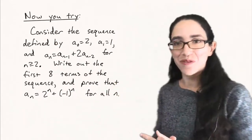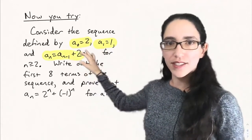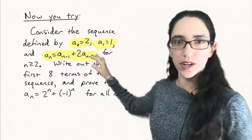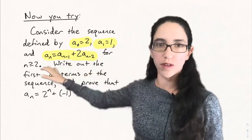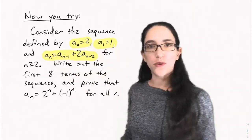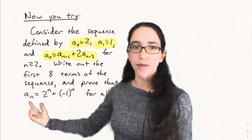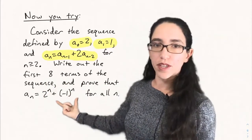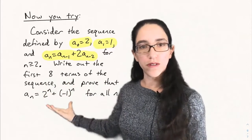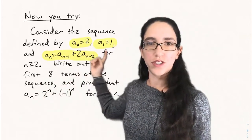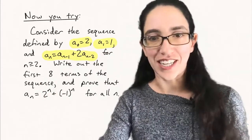So now you try working with a recursive sequence. Consider the slightly modified sequence defined by a₀ equals 2, a₁ equals 1, and aₙ equals aₙ₋₁ plus 2aₙ₋₂ — a little bit of a variation on the Fibonacci sequence. Write out the first eight terms of this sequence. If you do, you might see the pattern that aₙ equals 2ⁿ plus (−1)ⁿ for all n. The question is: can you prove this by showing it satisfies the two initial conditions and the recursion? That's all for today, and we'll see you next time.